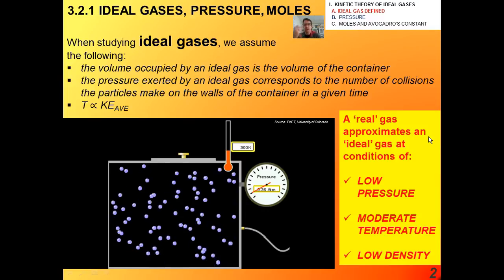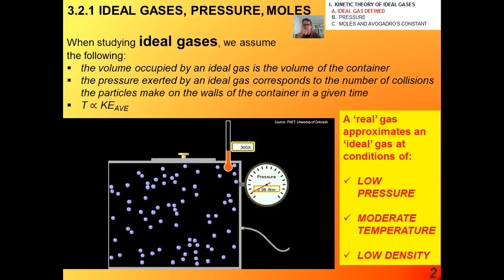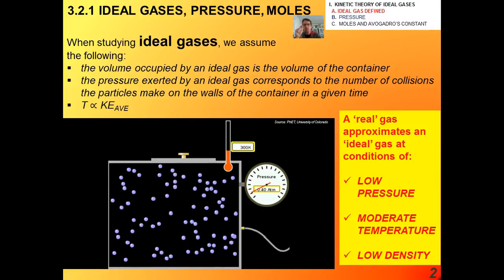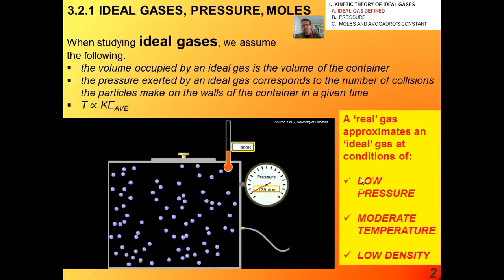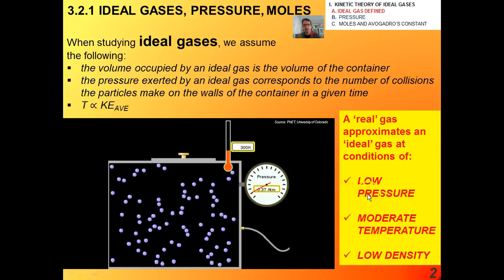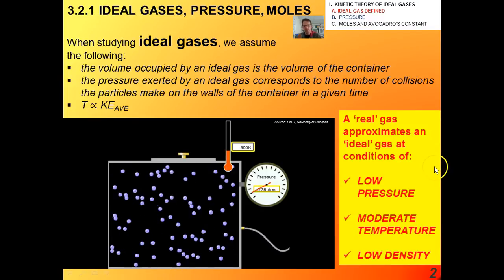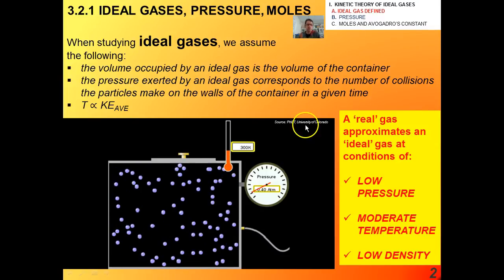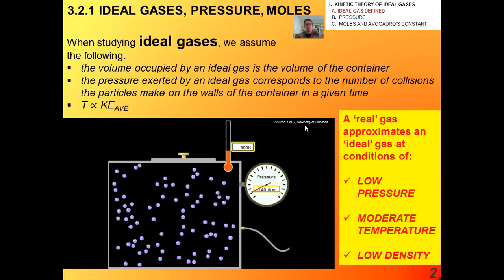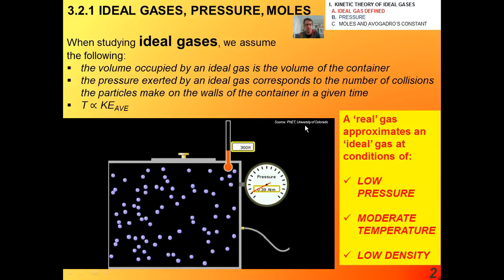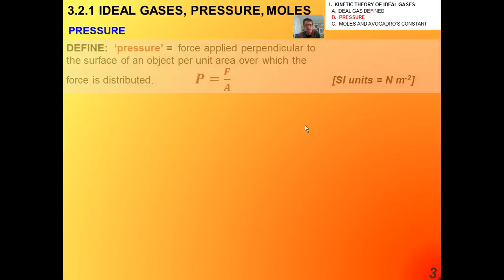It's important for you to also note that a real gas approximates an ideal gas only under the following conditions, when the pressure is relatively low, when the temperature is relatively moderate, and the density is relatively low. And so when we use the ideal gas law and deal with all these problems, we're going to always assume that these things are true.